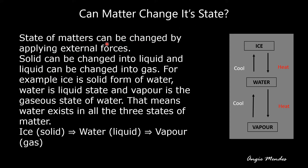Can matter change its state? States of matter can be changed by applying external forces. Solids can be changed into liquid, and liquid can be changed into gas. For example, ice is the solid form of water, water is the liquid state, and vapor is the gaseous state of water — meaning water exists in all three states of matter.